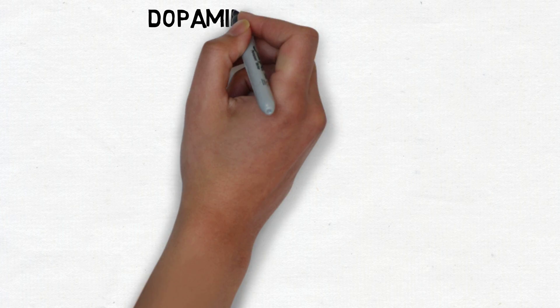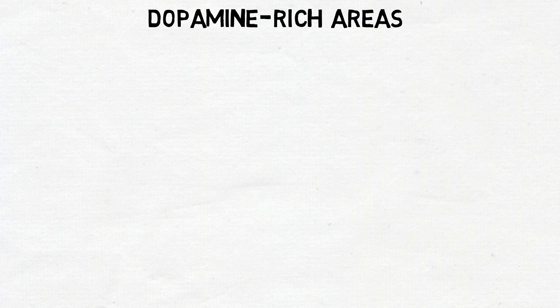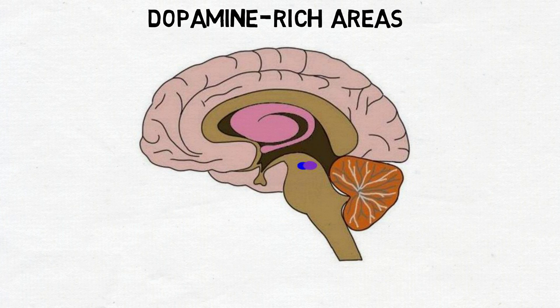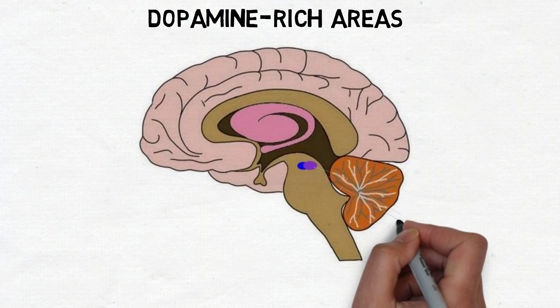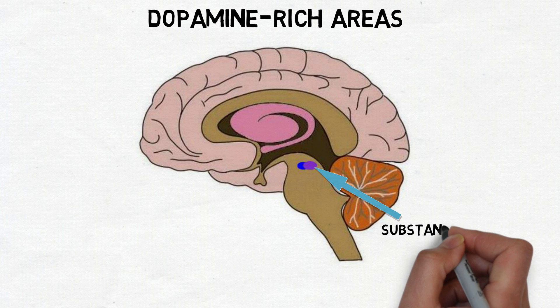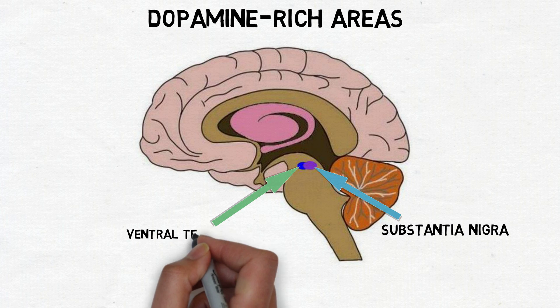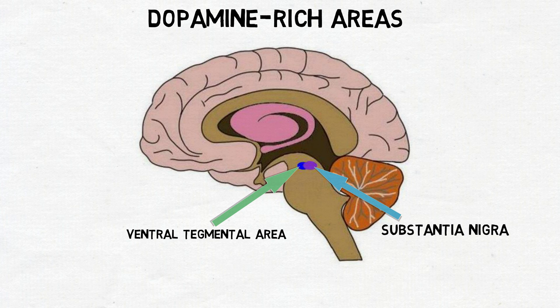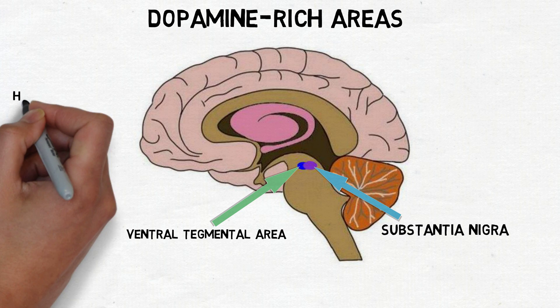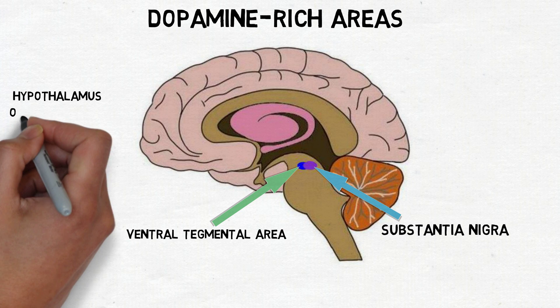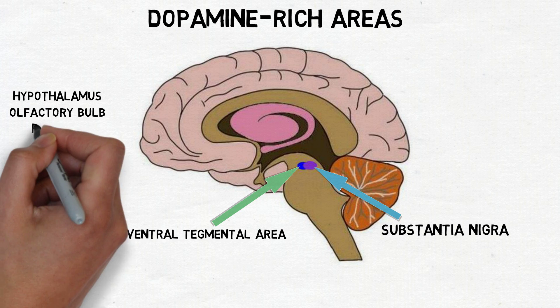There are several areas of the brain where dopamine neurons are concentrated. The largest are the substantia nigra and the ventral tegmental area in the midbrain. Other areas include the hypothalamus, olfactory bulb, and retina.